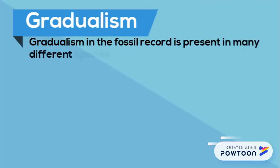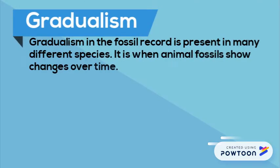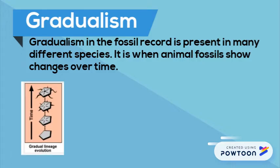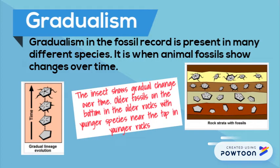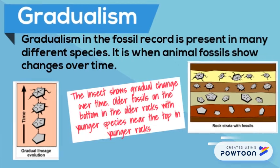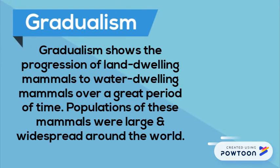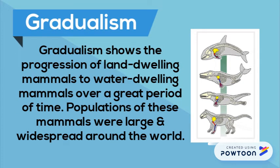Gradualism doesn't have an isolated population, but rather the changes in the fossils are recorded in the layers of rocks. Many times, different species from the same ancestor live together and are found in the same layers of rock, where one will out-compete the other, causing it to become extinct. This is very evident in the progression of land animals to water animals — they lived together and out-competed each other for resources. These populations were large and globally widespread.